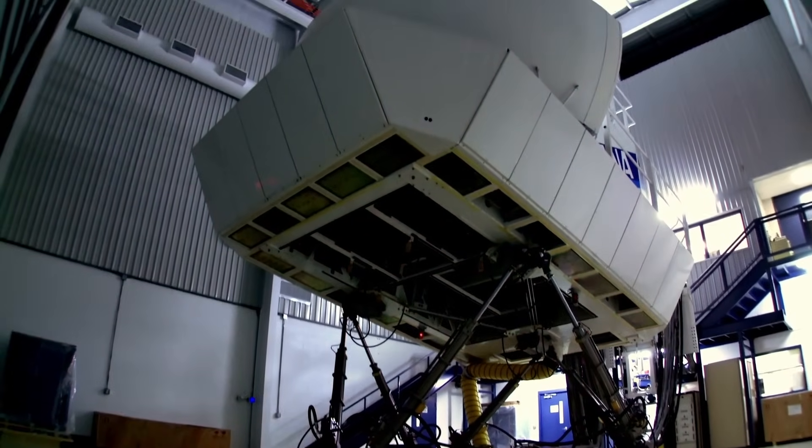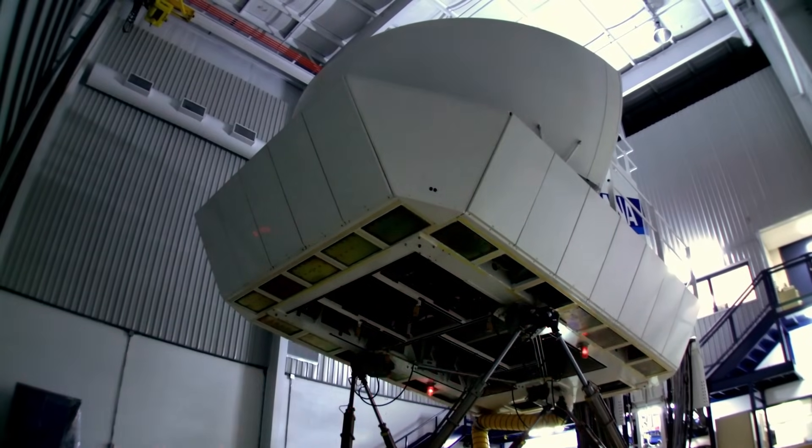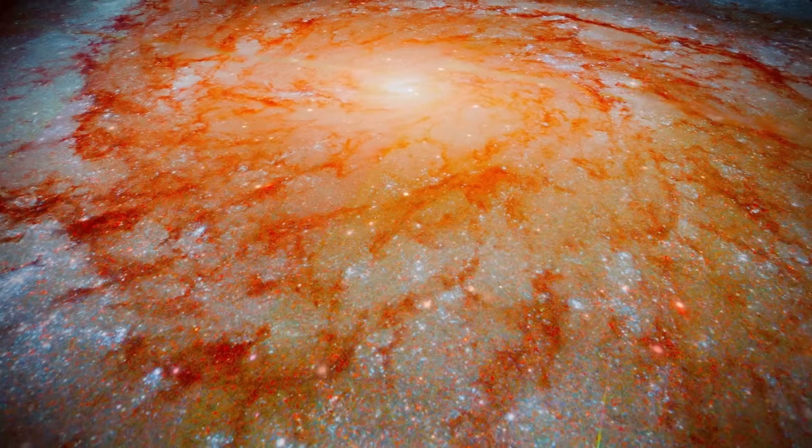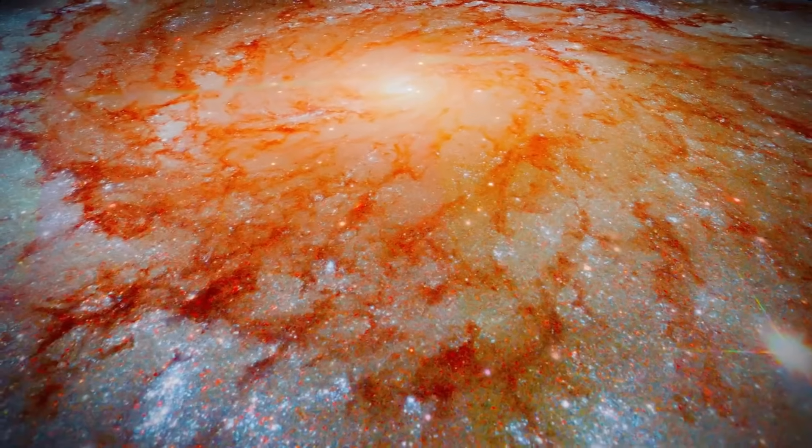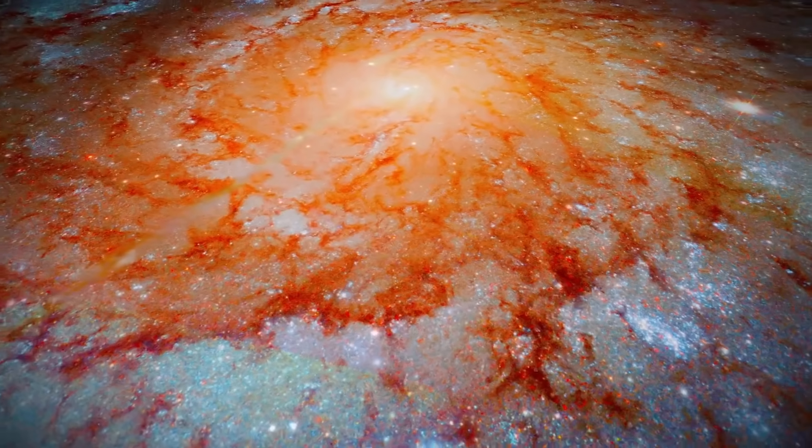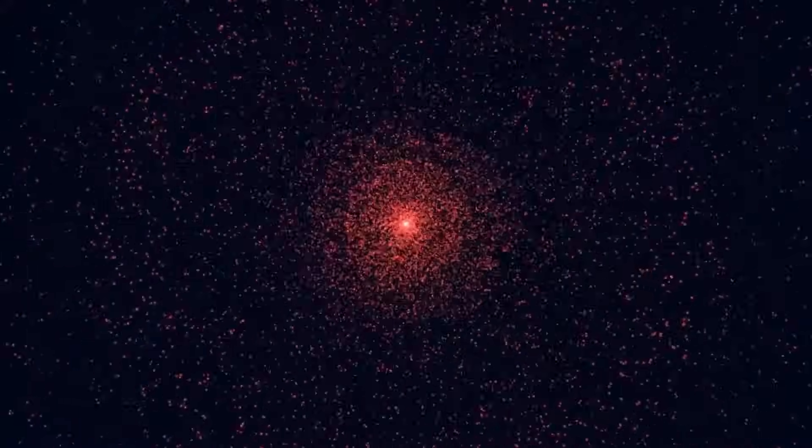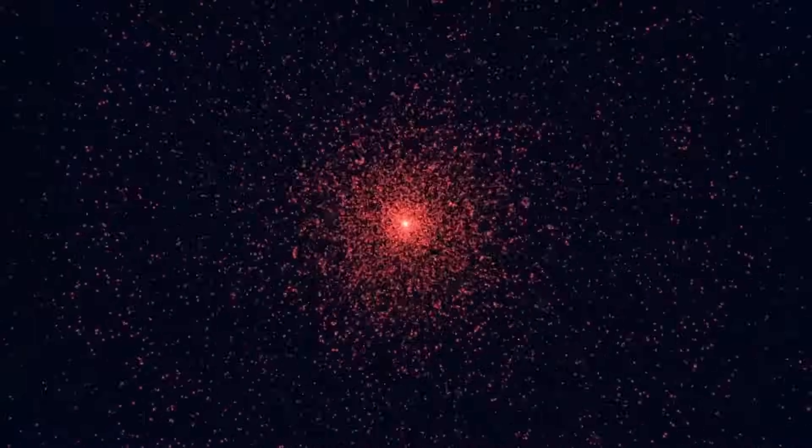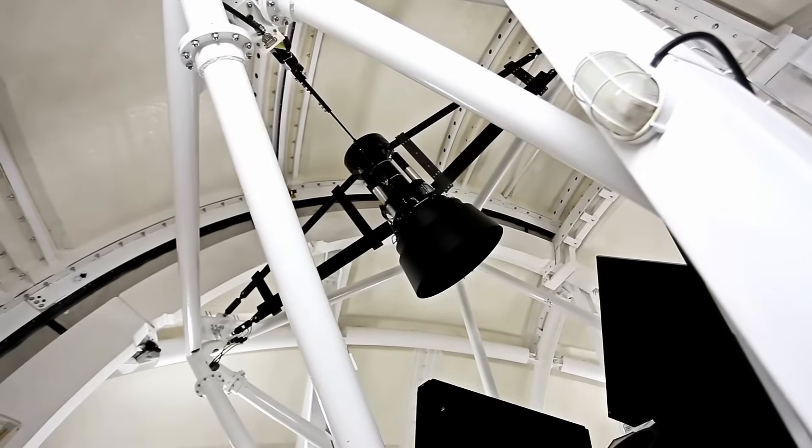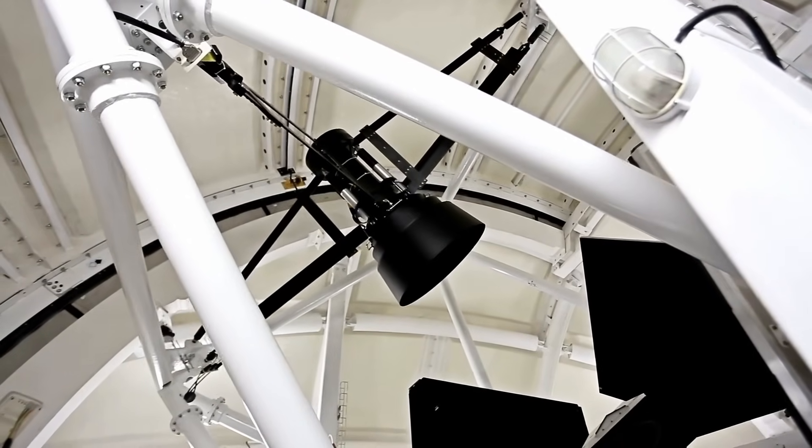What the James Webb Telescope has just confirmed about 3ATLAS is more than shocking. It's terrifying, and no one, not even NASA, is prepared for what comes next. From the very beginning, 3ATLAS stood apart from everything we thought we understood about interstellar visitors. Instead of a chaotic coma made of water vapor and dust, the Webb Telescope detected something completely different. An enormous red sphere of gas, nearly the size of the Earth-Moon distance,